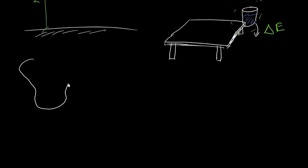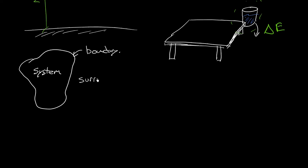So how does this tie into thermodynamics? We have some arbitrary system — some quantity of material with a boundary that we're interested in. Everything outside of that system we define as the surroundings. Boundaries can either permit heat through, permit matter to transmit, or you can have a movable boundary like a piston. There's a quantity of material we're interested in — say, a beaker.